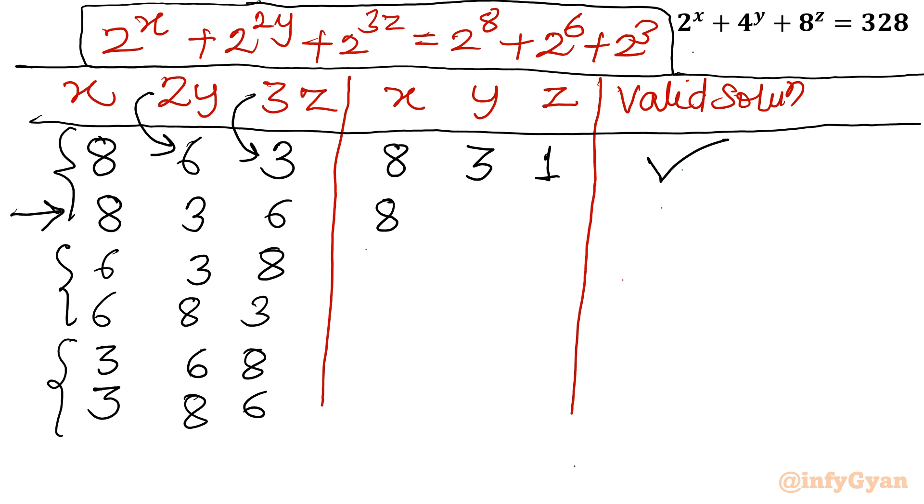Second triplet 8, 3, 6. 8 would be as it is. 2y is equal to 3, then y will be equal to 3 over 2. It is non-natural number or non-integer, it is decimal number. 3z is equal to 6, z is equal to 2. Because of this 3 by 2, this solution is not accepted. Come to the third triplet: 6, 3, 8. 6 would be as it is. 2y is equal to 3, so y will be equal to 3 by 2. 3z is equal to 8, so z is equal to 8 by 3. Both numbers are decimal numbers. So this solution is also rejected.